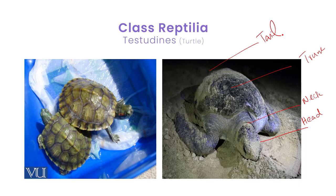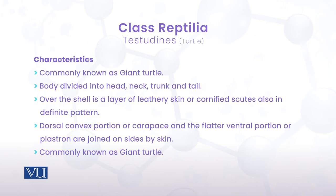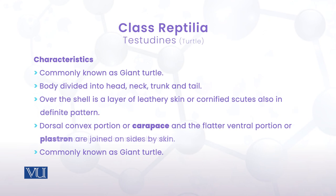Turtle کی body oval shaped shell کے اندر encased ہوتی ہے، جس میں سارے visceral organs ہوتے ہیں۔ Shell کے outer part پر cornified scutes کی layer ہوتی ہے جو desiccation اور water loss سے protection دیتی ہے۔ Shell کا اوپر والا convex part carapace کہلاتا ہے اور flatter ventral portion plastron کہلاتا ہے۔